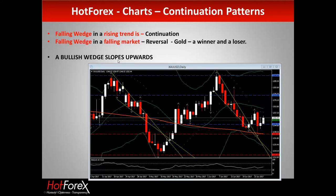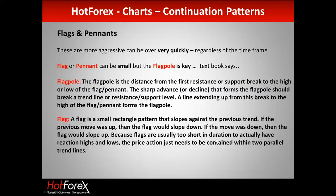To summarize wedges: a bullish wedge slopes upwards — bearish wedge slopes downwards. Sometimes it works, sometimes it doesn't, and it's as simple as that. Both supply and demand trend lines point in the same direction. Finally, flags and pennants — these can be very aggressive, very quick moves, and a bit scary sometimes.